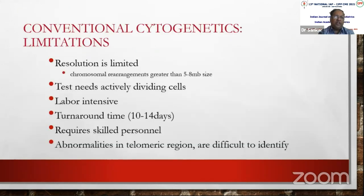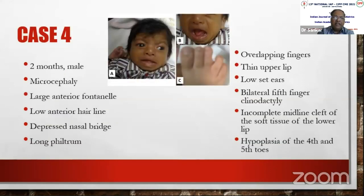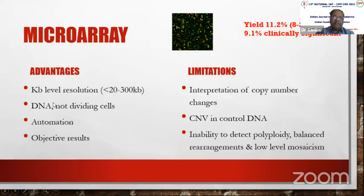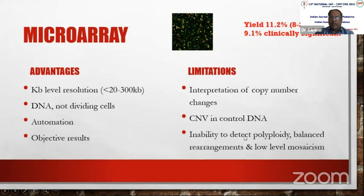Conventional cytogenetics has limitations: resolution is limited, it requires actively dividing cells, it is labor-intensive with a 10–14 day turnaround, and requires skilled personnel. Microarray overcomes these limitations — it uses DNA rather than dividing cells, is easy to transport, identifies copy number variants at higher resolution (less than 200–300 kb), and can detect small chromosomal abnormalities invisible to conventional karyotype. However, it cannot detect polyploidy, balanced translocations, or low-level mosaicism, and costs approximately ₹15,000 in India.